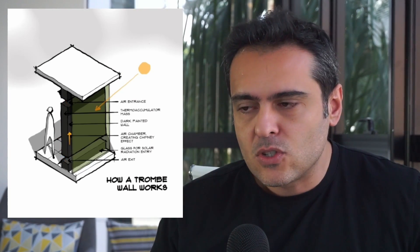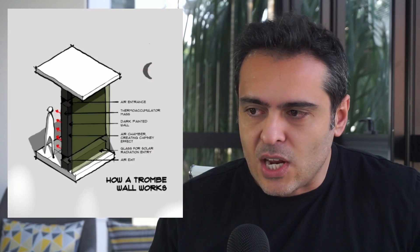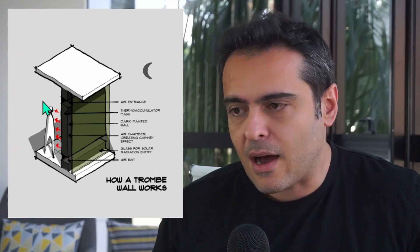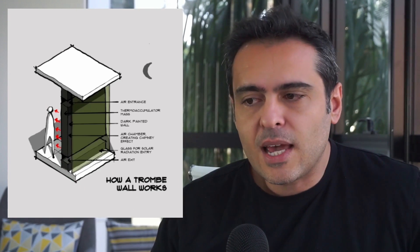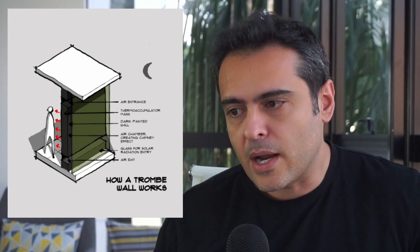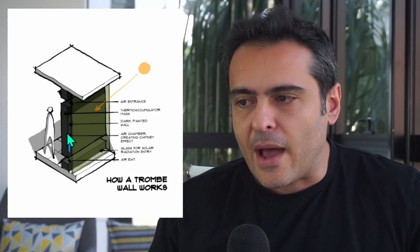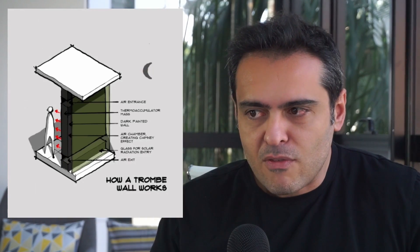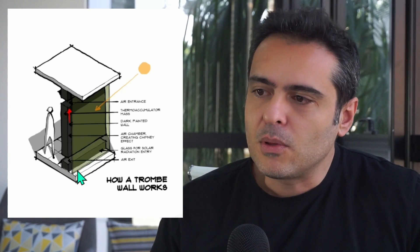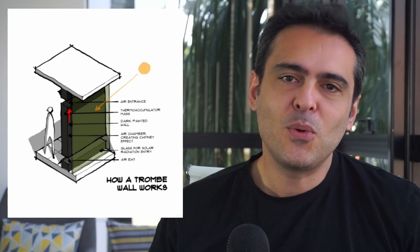And what is this skeleton? You can see that now it's day, so we are having this exchange of temperature. And when it's night, we can have these high-capacity walls to heat our building. Talking about this skeleton: we have the air exit, the air entrance, and here we have the glazing for solar radiation entry. Then we have this air chamber to create the chimney effect. We have this dark painted wall and the thermal accumulator mass. So this is a Trombe wall.